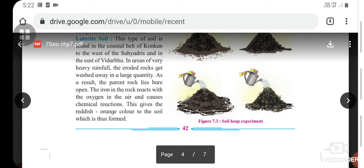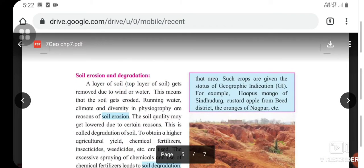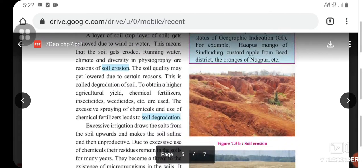Soil erosion and degradation: What is soil erosion? The top layer of soil gets removed due to wind or water. This means that the soil gets eroded. Running water, climate, and diversity in physiography are reasons of soil erosion.